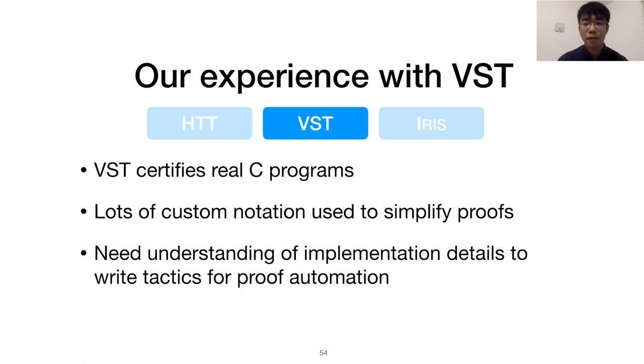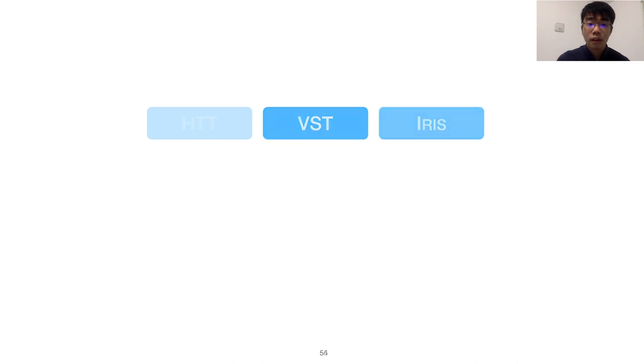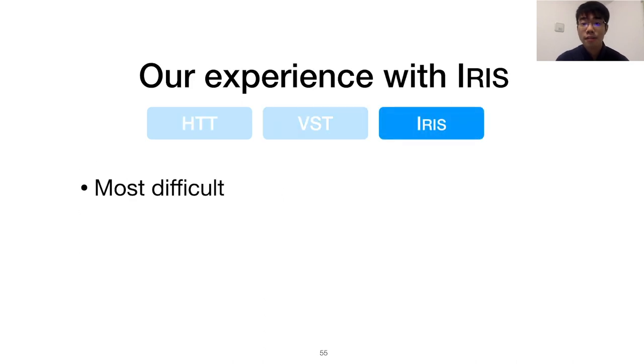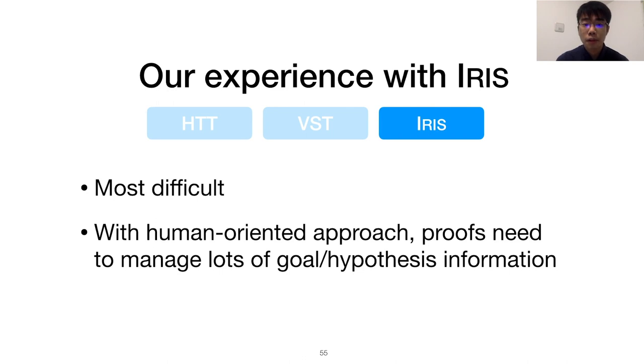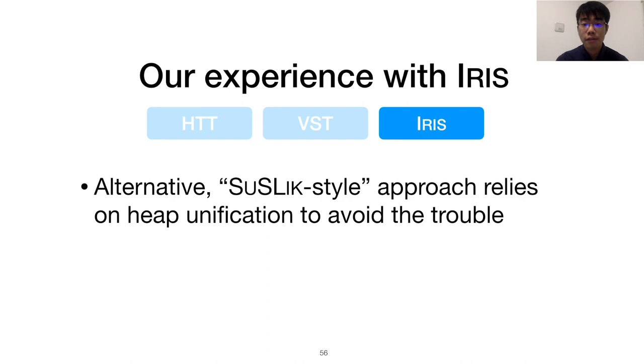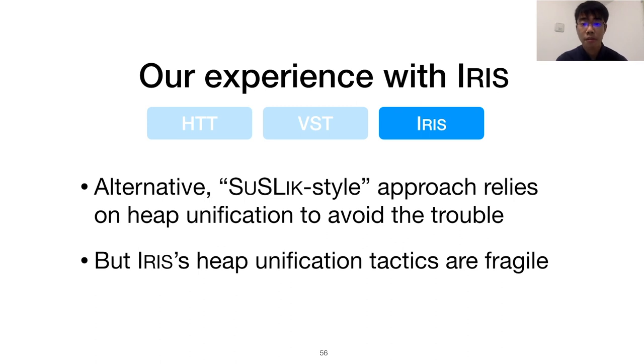We faced the most difficulty with IRIS, whose standard human-guided proofs require lots of explicit goal management and hypothesis name tracking, to a degree that it's troublesome even with our proof context. So, we extended IRIS with new tactics to let us write proofs in Syslic's proof style that relies heavily on heap unification. Unfortunately, IRIS's unification tactics are more fragile compared to VST's, so it needs to be done very carefully to keep the proofs tractable.